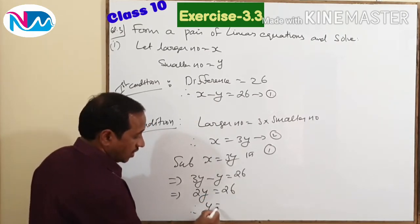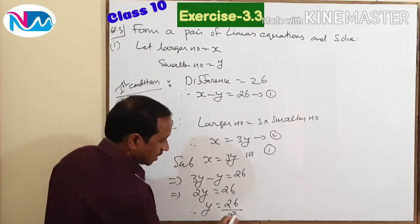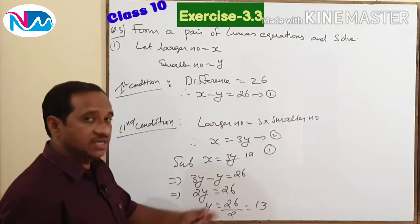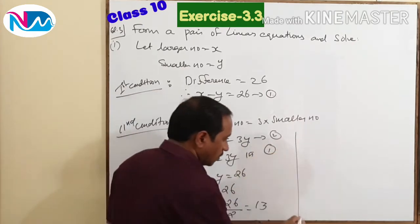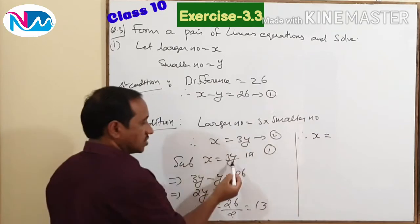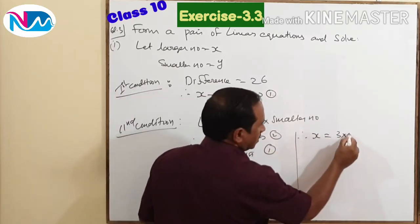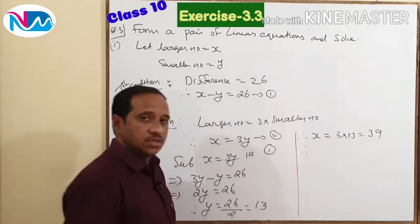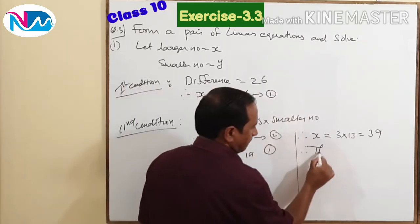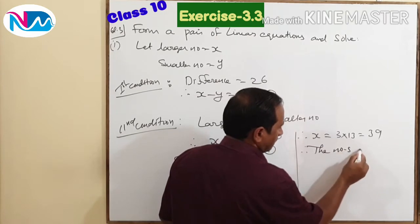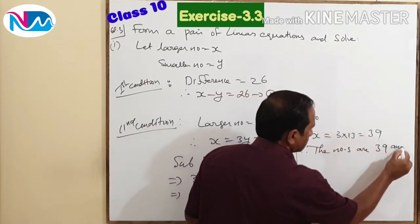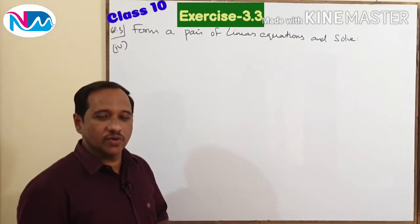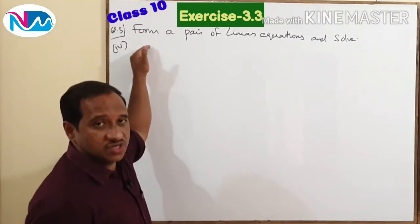Therefore, y equals 26 divided by 2, which is equal to 13. The value of y is 13. Therefore, x equals 3y, that is 3 times 13, which is 39. Therefore, the two numbers are 39 and 13. The next question we are going to consider is the fourth question under question number 3.